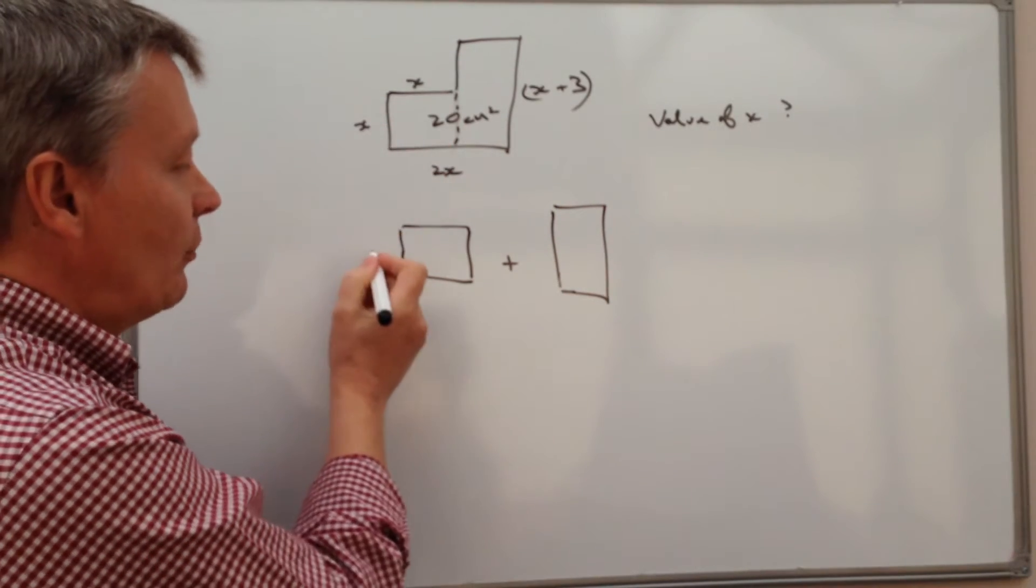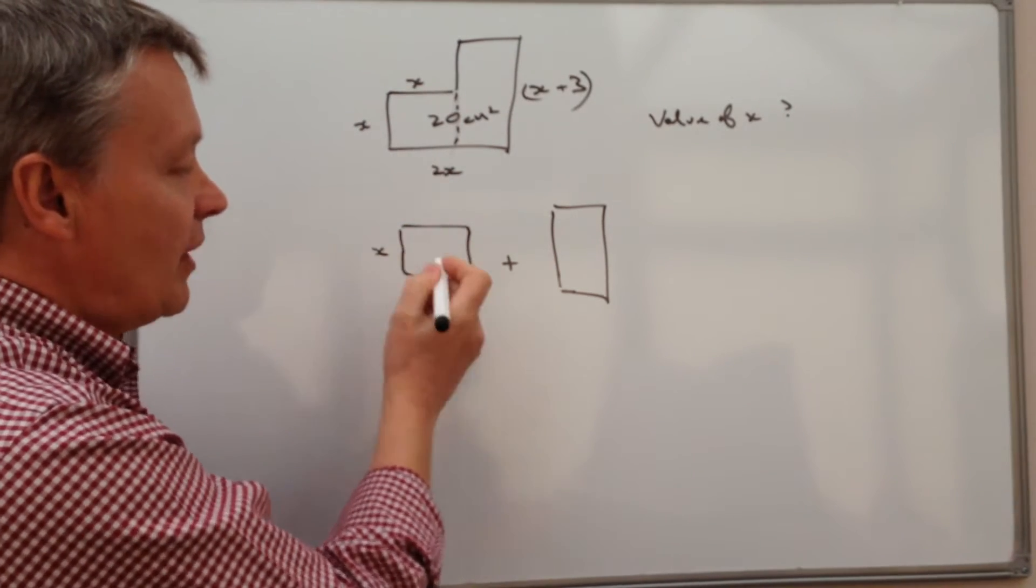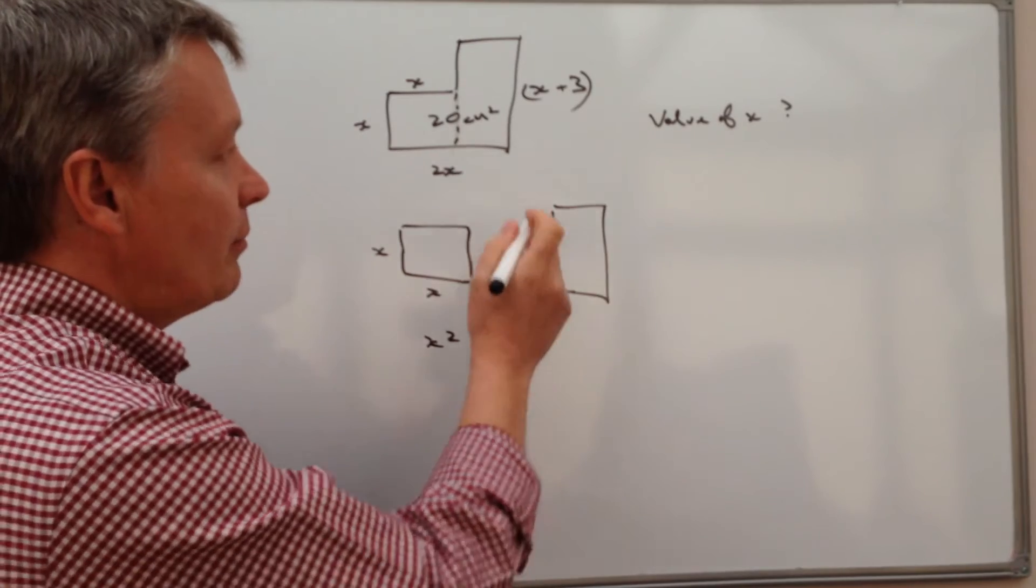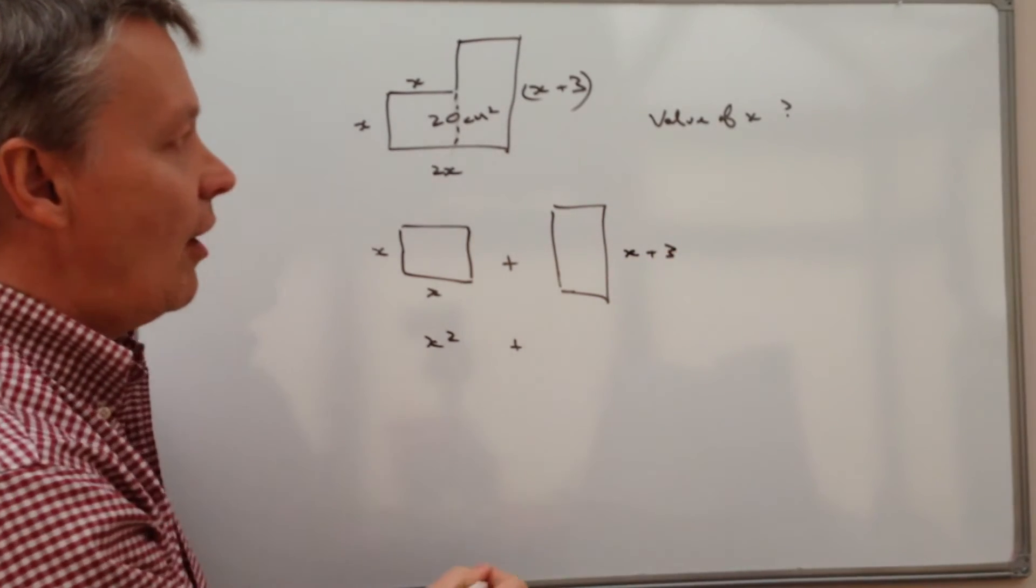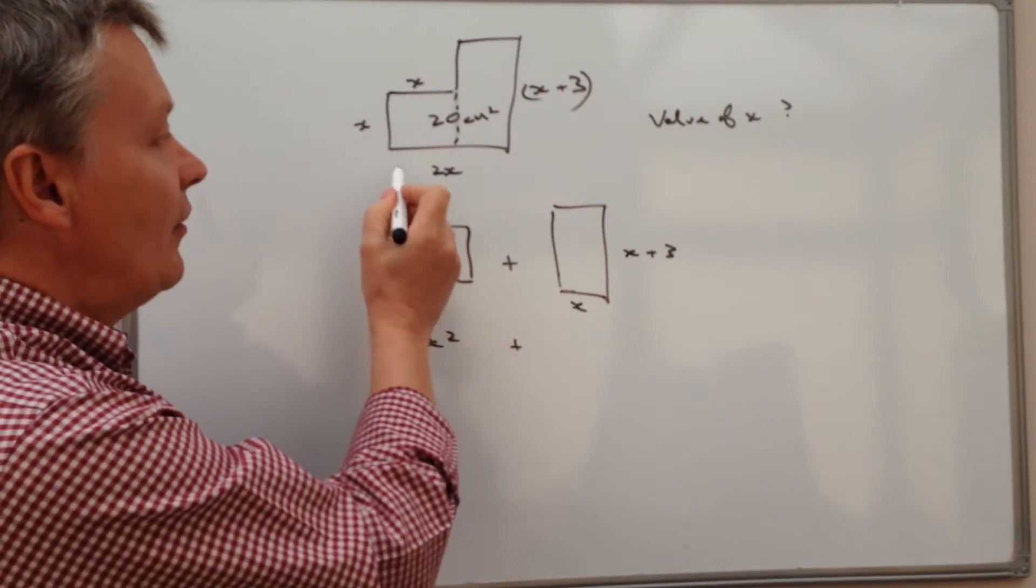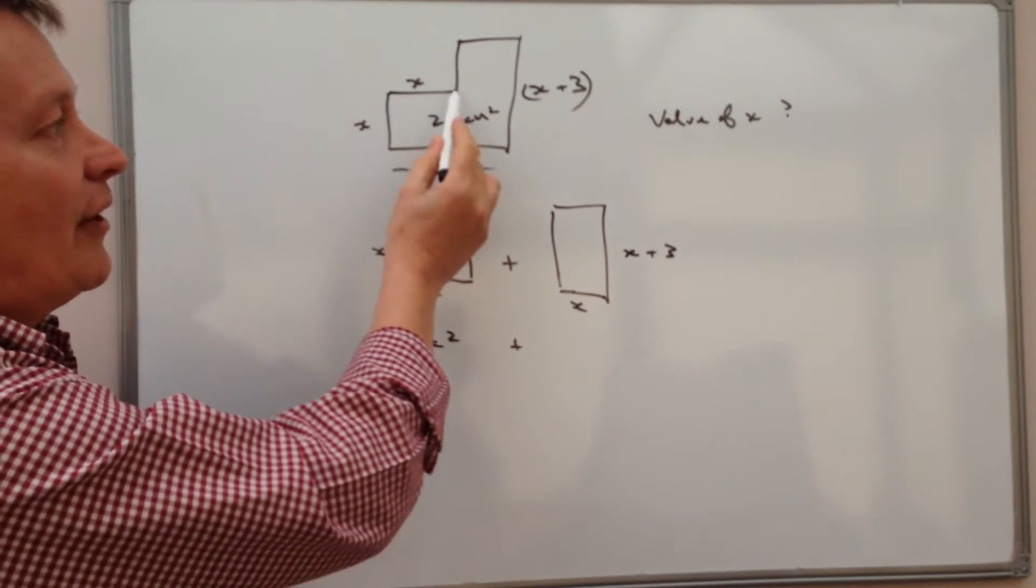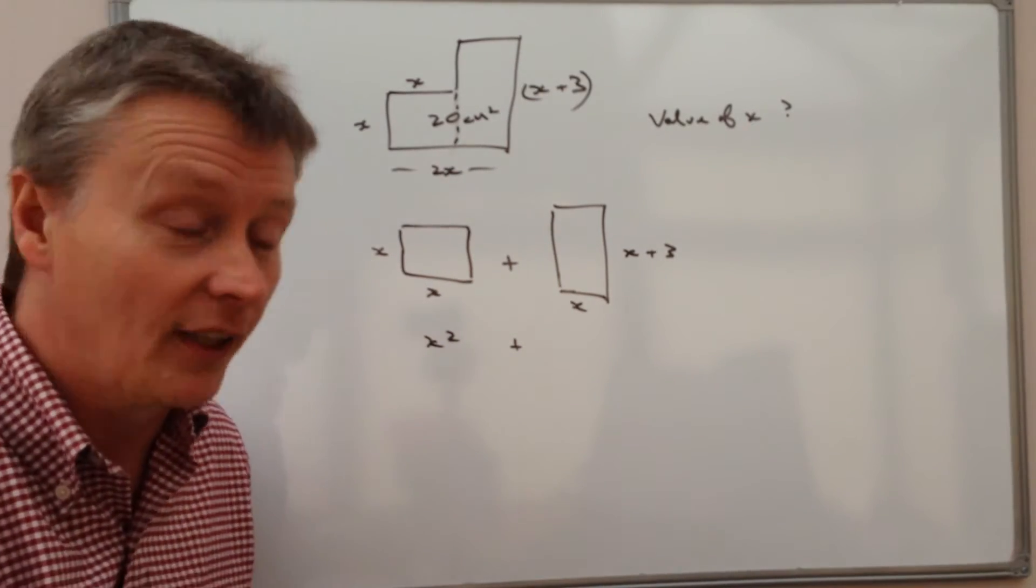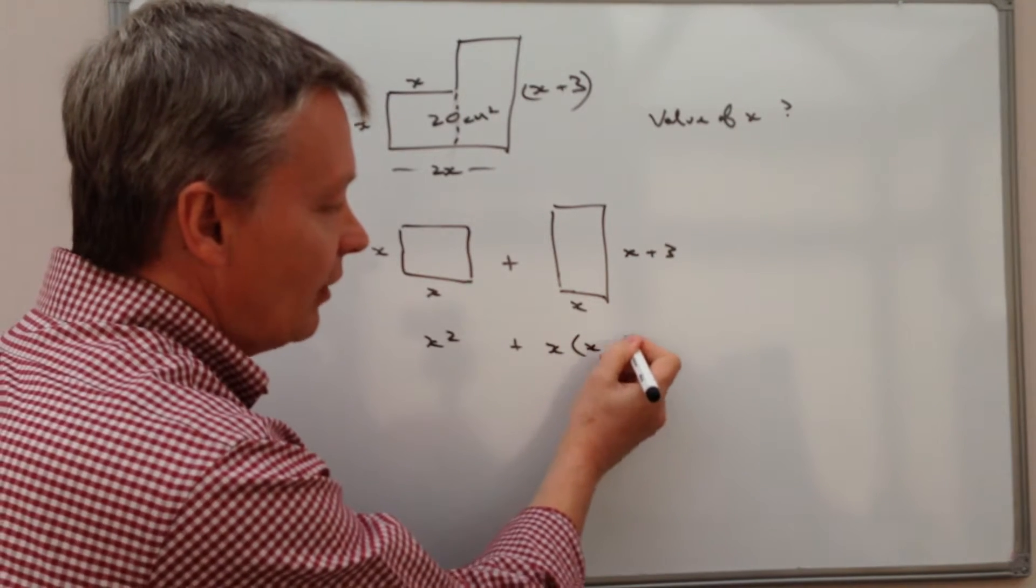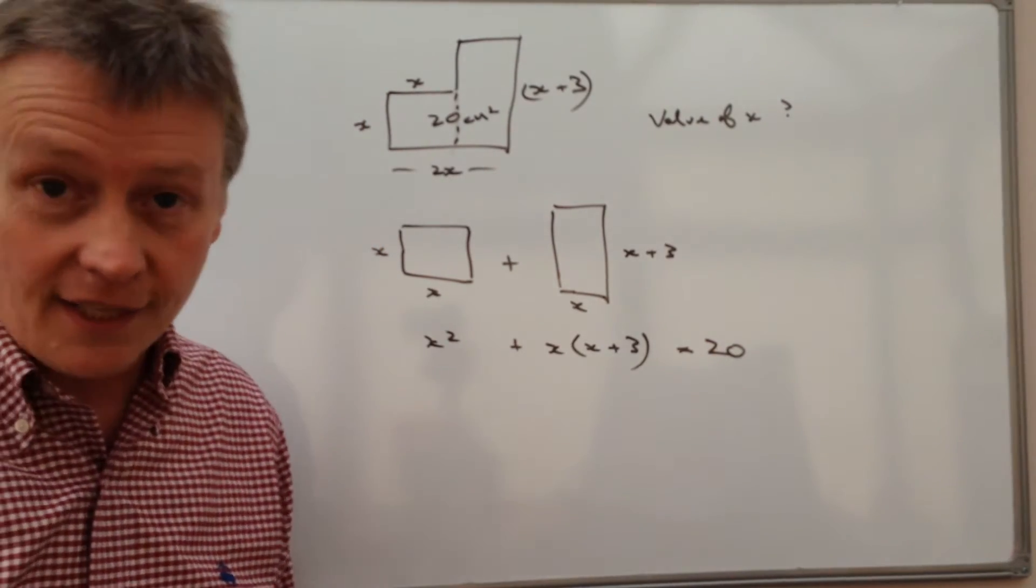So this particular one we've got x and x, the value of x here is x times x, so this bit here is going to be x squared. This one here is going to be x plus 3 along the top and along this bottom here is actually also going to be x because this overall length is 2x and half of it or this area here is x. So therefore the remaining bit must be x as well. So what we've got here is x times x plus 3. And what we know is if we add all that up together it's going to make 20 centimeters squared.